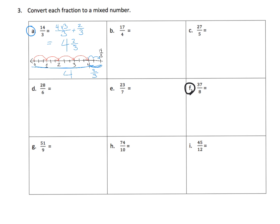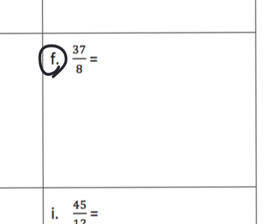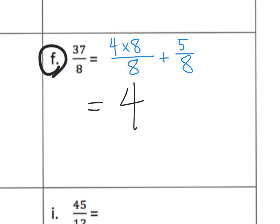Let's do problem F: thirty-seven-eighths. Thinking about my eights — eight times one is eight, eight times two is sixteen, eight times four is thirty-two, eight times five is forty. So eight times four is as close as I can get. Four times eight is thirty-two, and then we have five-eighths left over — thirty-two plus five is thirty-seven. So four times eight-eighths is equivalent to four wholes, because you have four copies of eight-eighths, which is four copies of one whole. That's four plus the extra five-eighths.